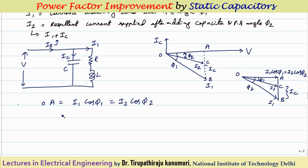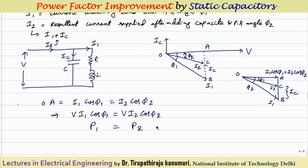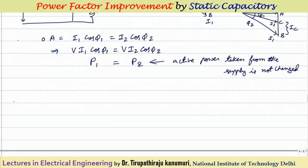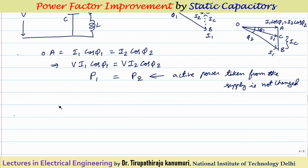Multiplying both sides by V: V·I1·cos(phi1) = V·I2·cos(phi2), which means the active power before connecting the capacitor equals the active power after connecting the capacitor. This indicates that when using a static capacitor, the active power remains constant.